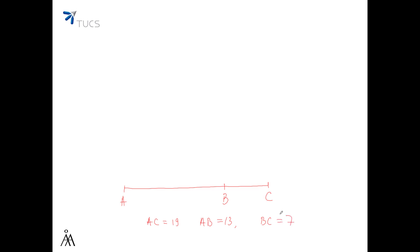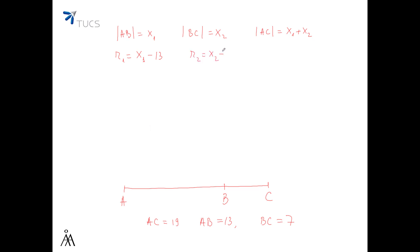There is obviously something wrong here, and our problem is to find values for the length of each segment that give the best fitting using the Chebyshev criterion. We denote the length of AB as x1 and the length of BC as x2, so the length of AC is x1 plus x2. The deviations are: R1 = x1 minus 13, R2 = x2 minus 7, and R3 = x1 plus x2 minus 19.